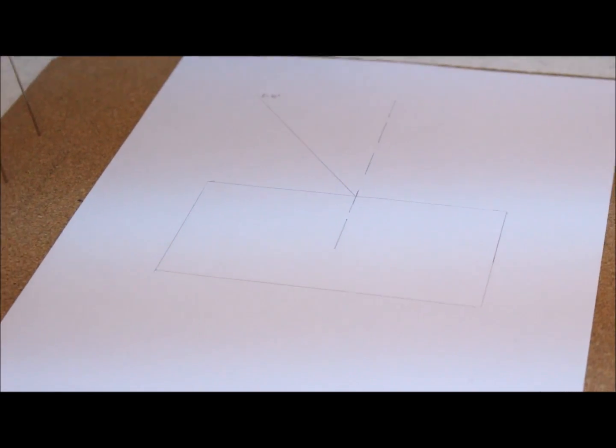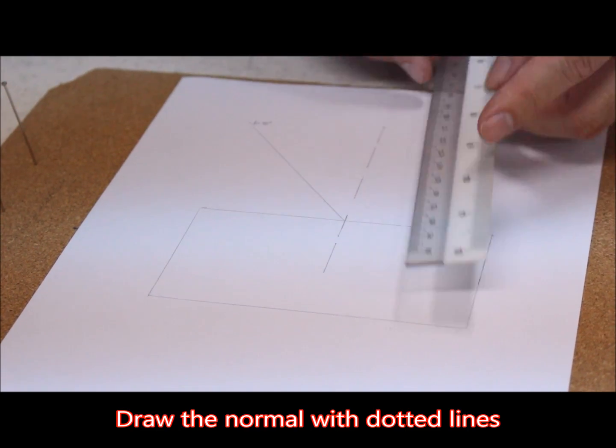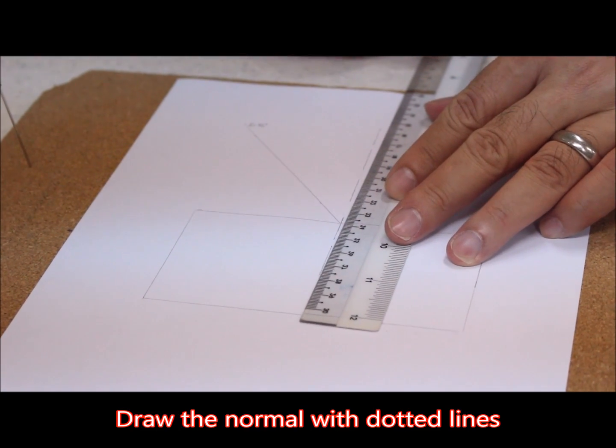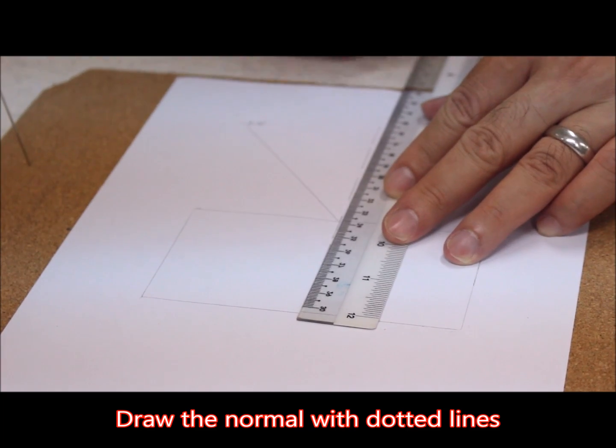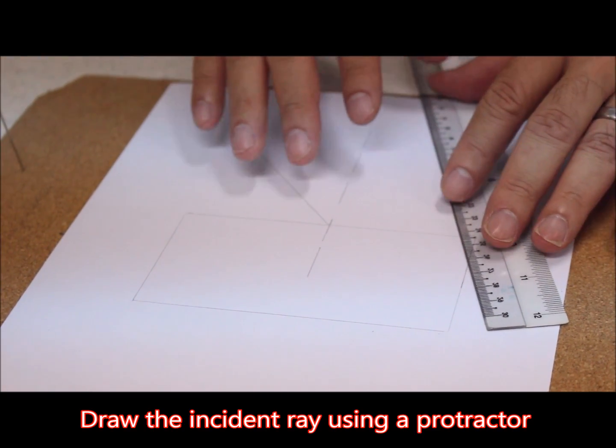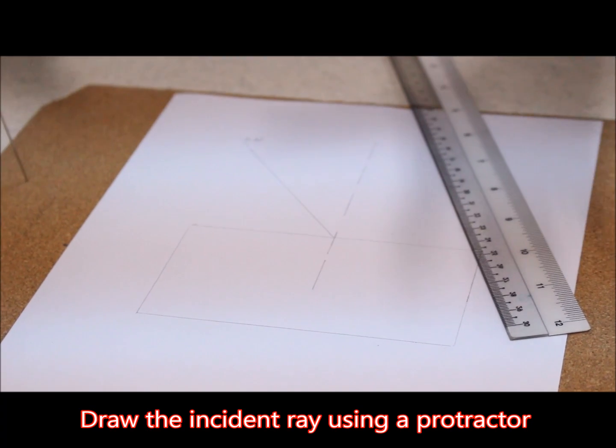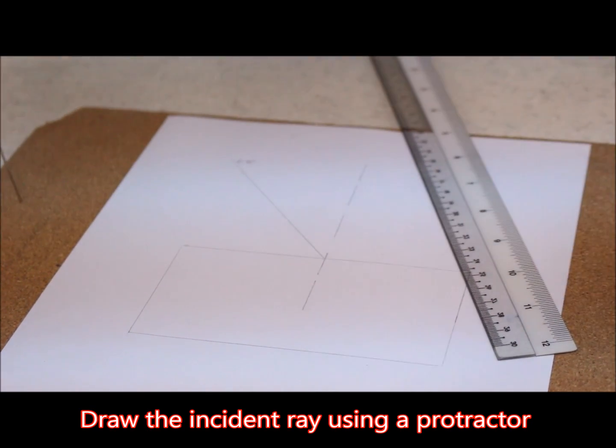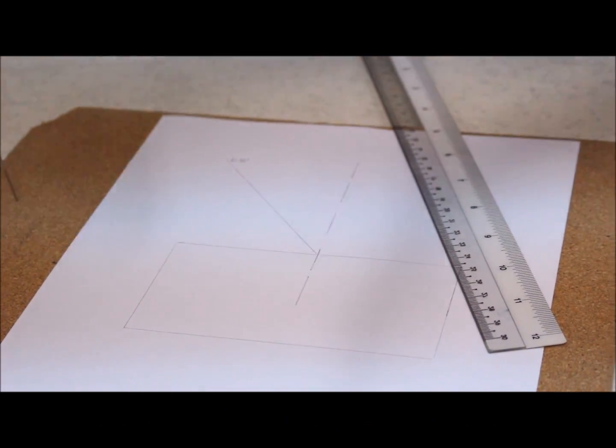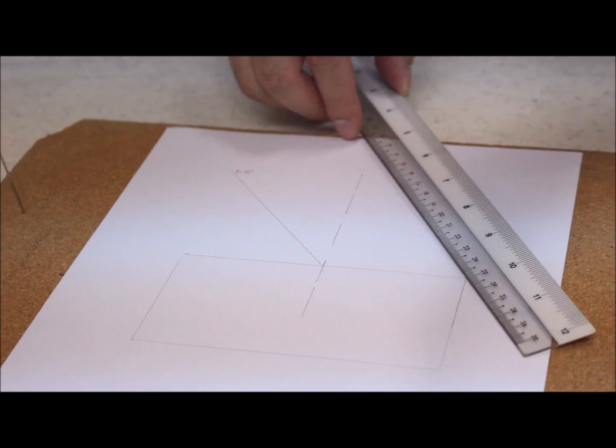After the outline is drawn, draw the normal and then use a protractor to measure the incident angle. This incident angle is predetermined - it can be the angle you want according to the practical instructions.